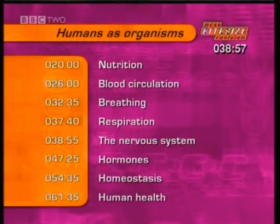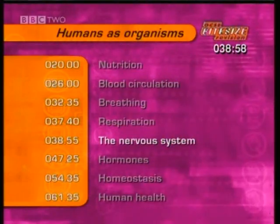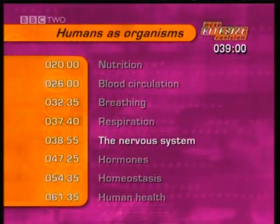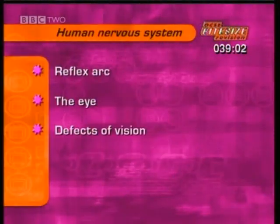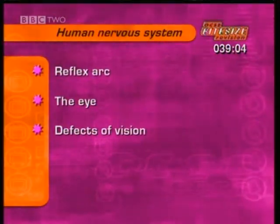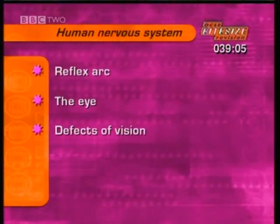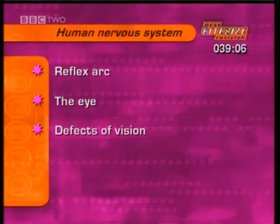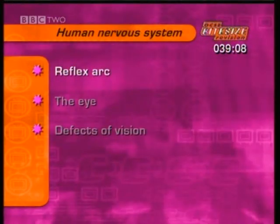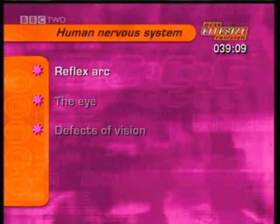This section is about the human nervous system. This section covers the reflex arc, the eye, and defects of vision. First, the reflex arc.